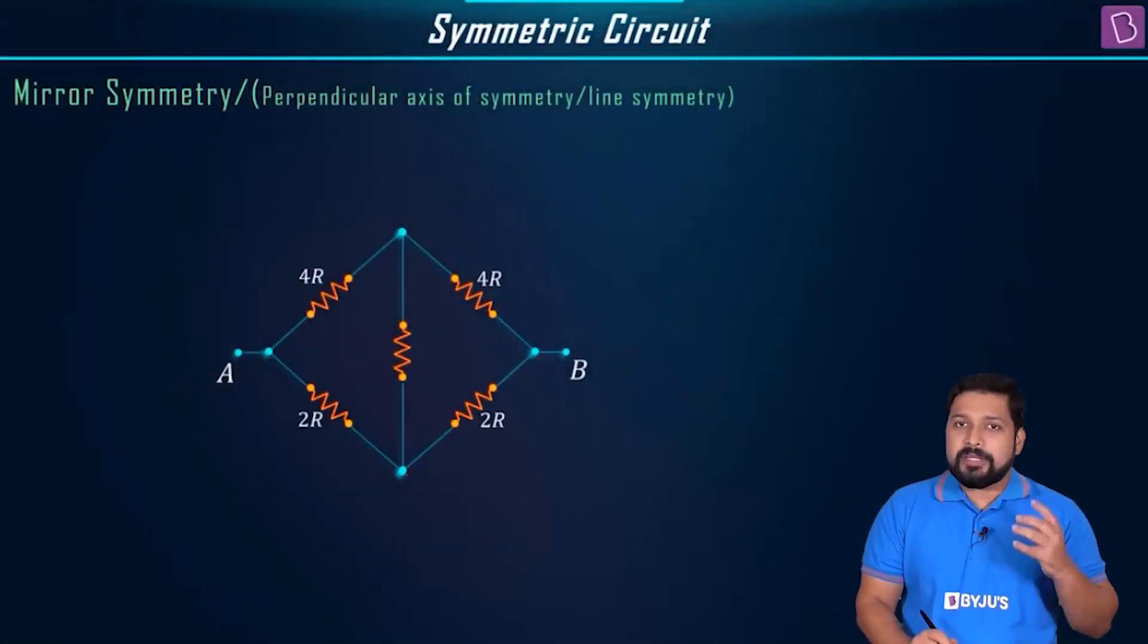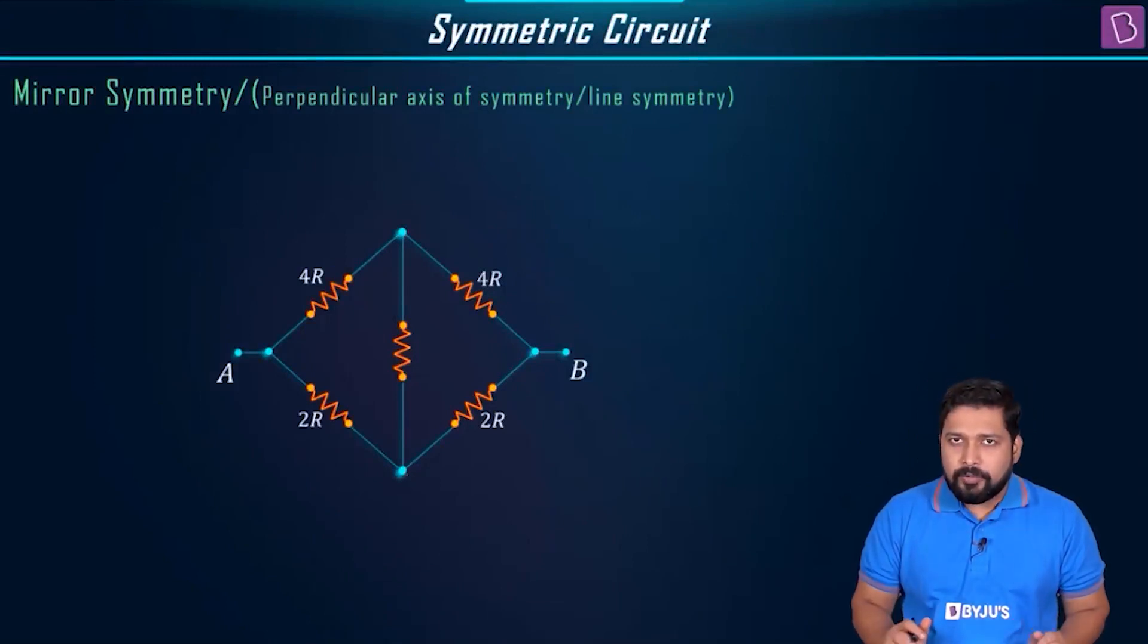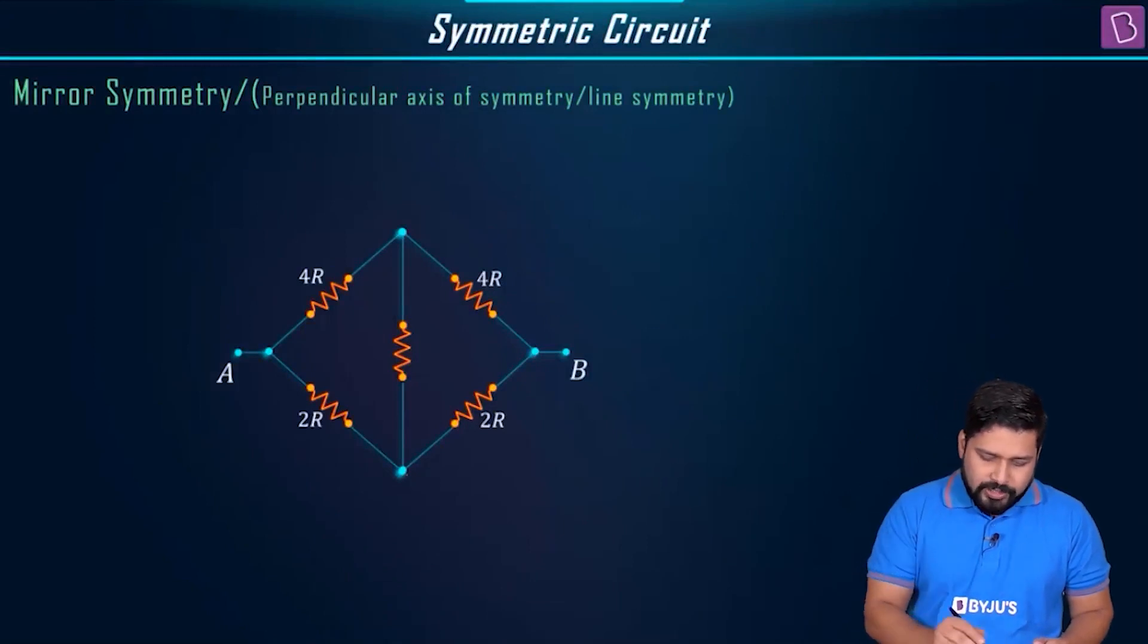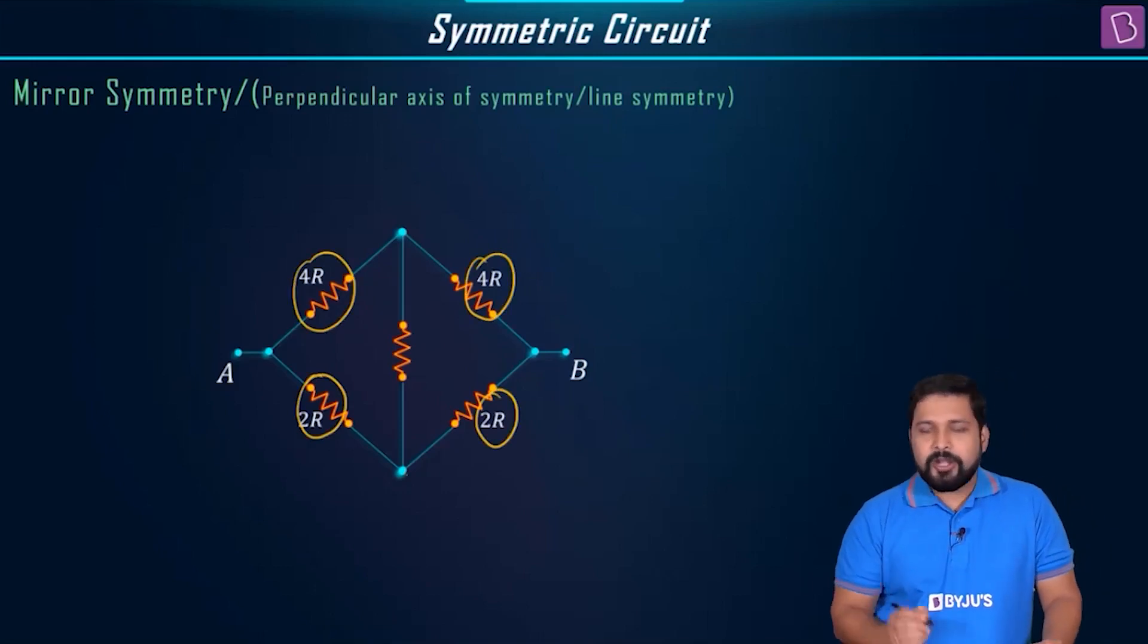So, now when we talk about mirror symmetry, symmetrical circuit, how do we solve? I have taken an example of a Wheatstone bridge. As you can see that this by this is equal to this by this, right? 4 by 2R, 4R by 2R is equal to 4R by 2R, which means this is a balanced Wheatstone bridge.